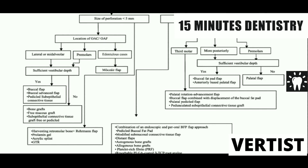In short, you need to draw a flowchart for a full question. For a short note, restrict your answer to definition, etiological factors, signs and symptoms, and various ways of closure. See what has been asked — whether the exam is asking about fistula or communication, chronic or acute. If the size of the opening is less than 5 mm, localize it and proceed with the procedures mentioned.